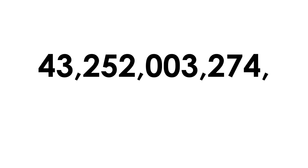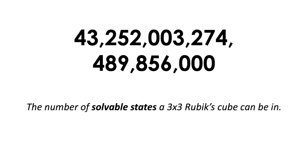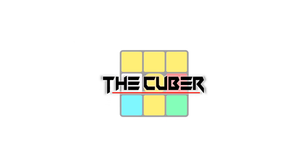43 quintillion, 252 quadrillion, 3 trillion, 274 billion, 489 million, 856 thousand. This is the amount of solvable states a 3x3 Rubik's cube can be in.